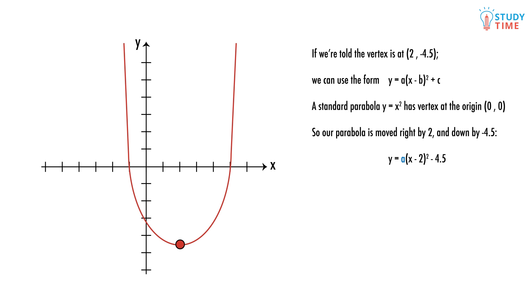Again, remember if a transformation is inside the brackets, the sign is reversed. We now have the equation y equals a times (x minus 2) squared minus 4.5. To solve this though, we need another point. We might be told that at x equals 7, y equals 16. We can substitute in these values and solve for our slope.